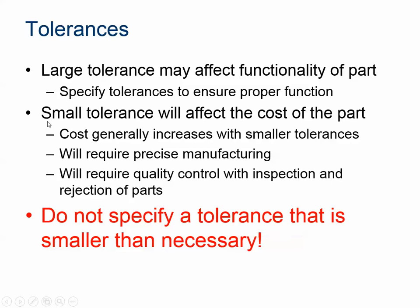Whereas if you have the opposite — a small tolerance — that means that every time you have a part that doesn't fit that bill of measurements, you're not going to be able to use it. So the smaller the tolerance you have, the more it's going to cost to get parts exactly the way they're supposed to be. Costs generally increase with smaller tolerances, so you have to find that fine line where a tolerance is not so large that it makes the part not function, but not so small that it makes it difficult to produce.